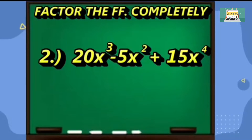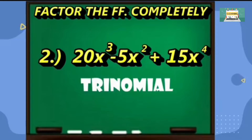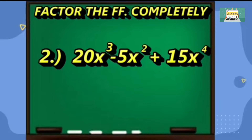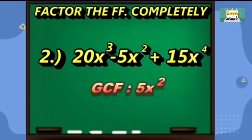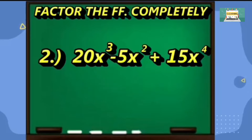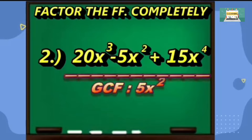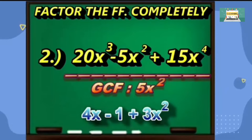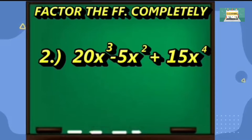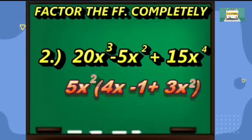Second given: 20x cubed minus 5x squared plus 15x to the 4th. The given is a trinomial. Step one, find the greatest common monomial factor of each term. In this case, the greatest common factor is 5x squared. Step two, divide the given polynomial by GCF and find the quotient. The quotient will be 4x minus 1 plus 3x squared. Last step, the factored form will be 5x squared times the quantity 4x minus 1 plus 3x squared.